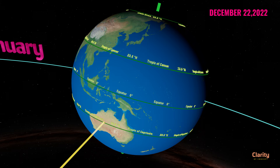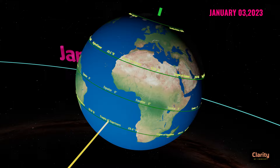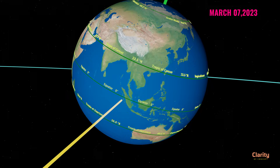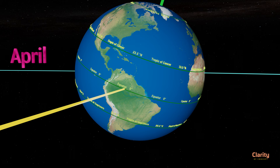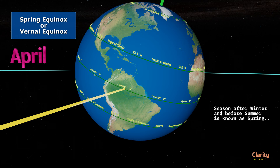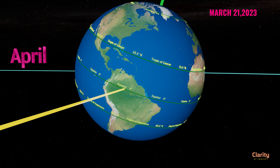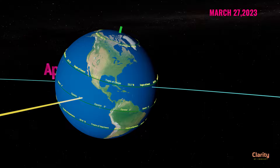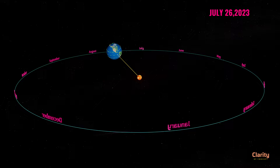After winter solstice, the sun makes a U-turn and starts moving northwards. The subsolar point reaches the equator on March 21st. It is similar to the earlier equinox and marked by equivalence of day and night. Since the season after winter and before summer is known as spring, March 21st is known as the spring equinox or vernal equinox. The circle of illumination again passes through both the north and south poles. Sun will rise at the north pole and set at the south pole after this date. Sun will be above the horizon for the next 6 months at the north pole and below the horizon at the south pole, and the whole process repeats.